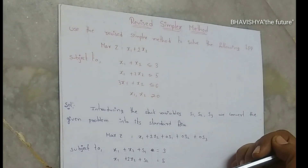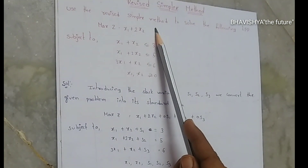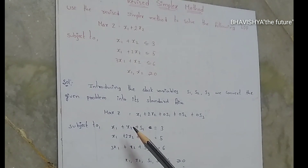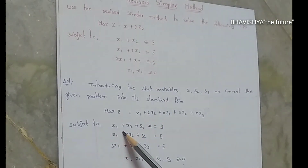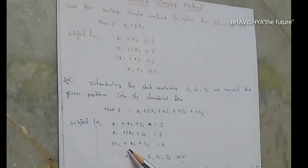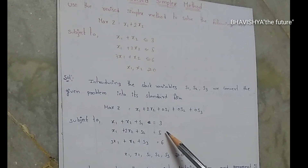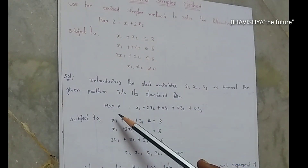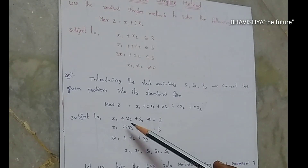Now let's see the process of how to solve using the revised simplex method. First, we convert the given equations into standard form by adding slack variables. The constraints become: x1 + x2 + s1 = 3, x1 + 2x2 + s2 = 5, and 3x1 + x2 + s3 = 6. By adding slack variables, the constraints become equations, and the slack variables are added to the objective function z with zero coefficients.